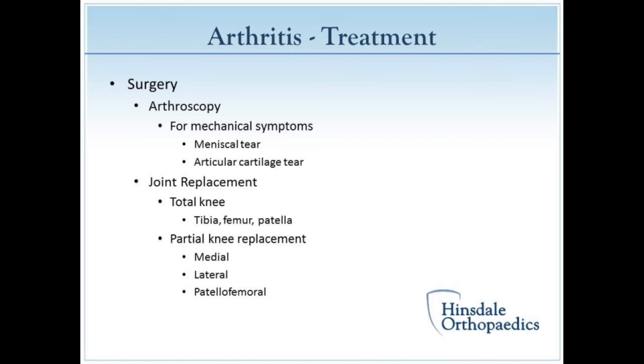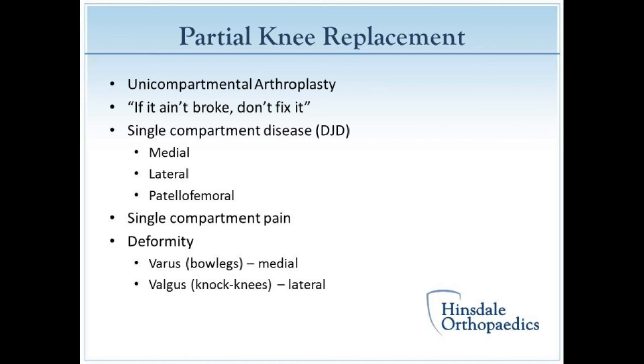If a patient has pain all throughout their knee on both sides, or significant pain on the kneecap, then I would probably consider them for total knee replacement. People who have arthritis in just one single compartment — for example, on the inside part of the knee — will often come in bow-legged because that's where the bone-on-bone contact is. If it's on the outside part of the knee, those people tend to have more symmetrical wear.